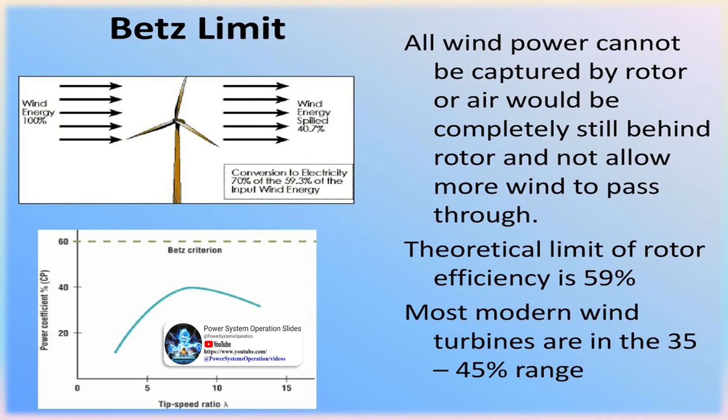The last step in calculating the Betz efficiency CP is to divide the calculated power extracted from the flow by a reference power value. The Betz analysis uses for its power reference the power of air upstream moving at V1, contained in a cylinder with the cross-sectional area S of the rotor.